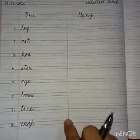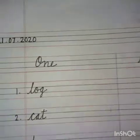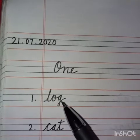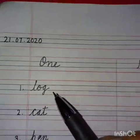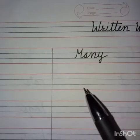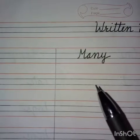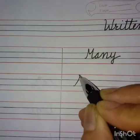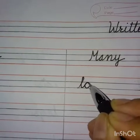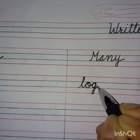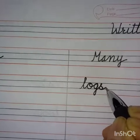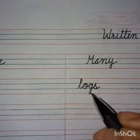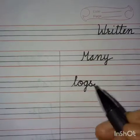Draw this line with the help of a scale. Now number one: L-O-G — Log. One log. Now we will make many, so we will add S here: L-O-G-S — Logs. Many logs.